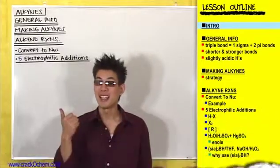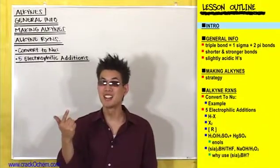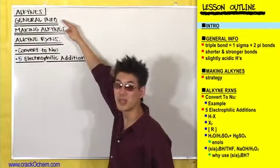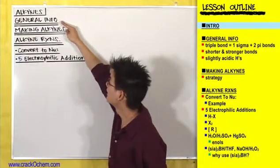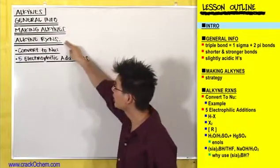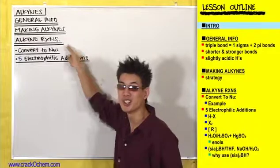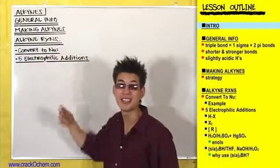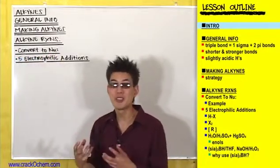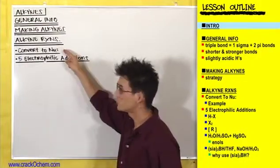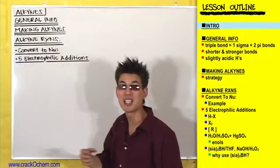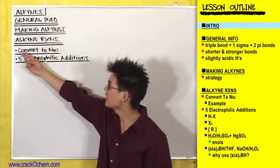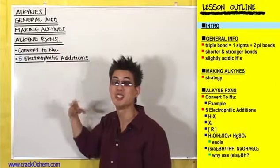You've already learned about alkanes with single bonds and alkenes with double bonds. Now it's finally time to learn about alkynes — triple bonds. Let's start off with general information about alkynes to get acquainted with them, then move on to how you make alkynes, and finish by talking about the types of reactions alkynes will undergo. The first main reaction category is converting an alkyne to a nucleophile, making these triple bonds into nucleophiles so they can do SN2 reactions.